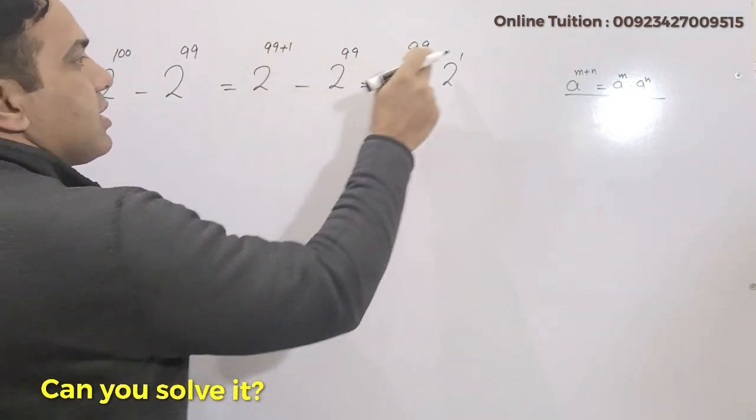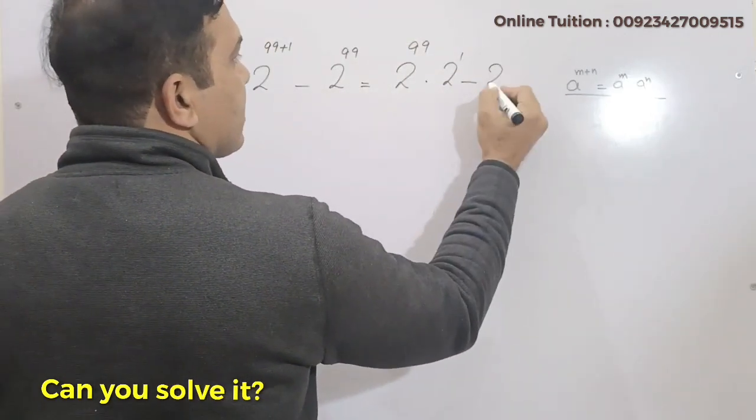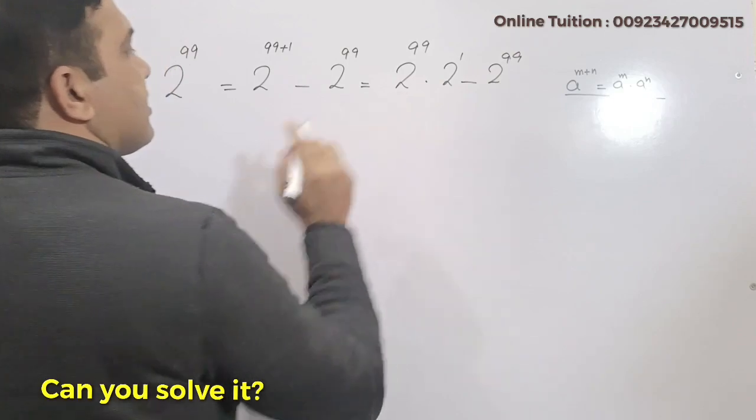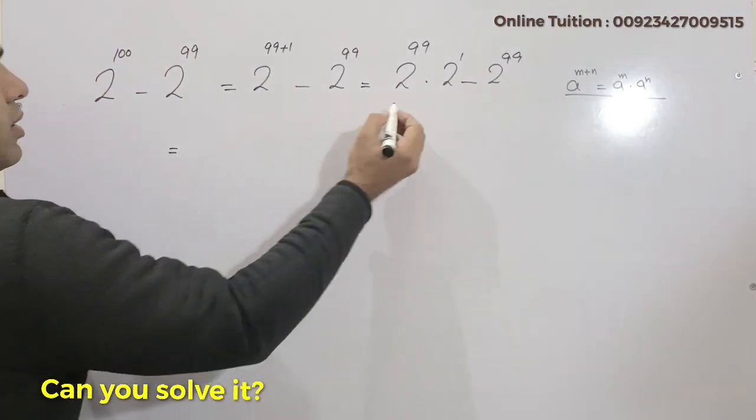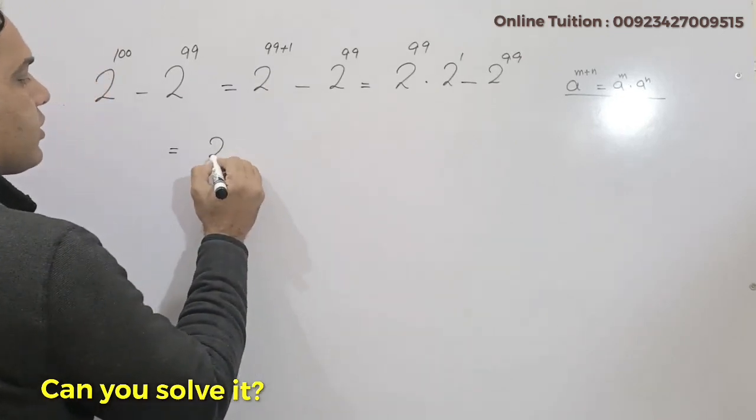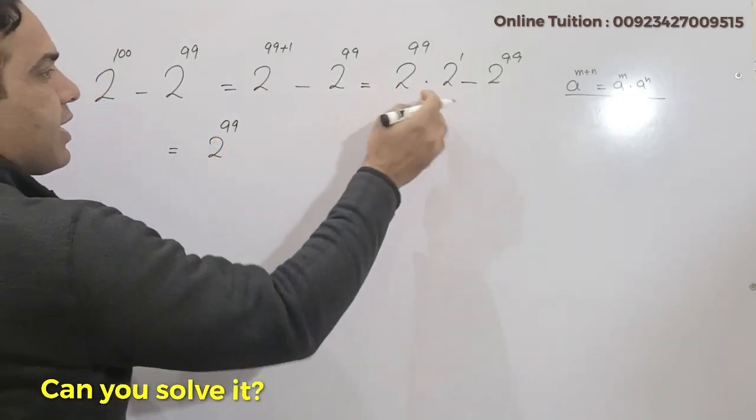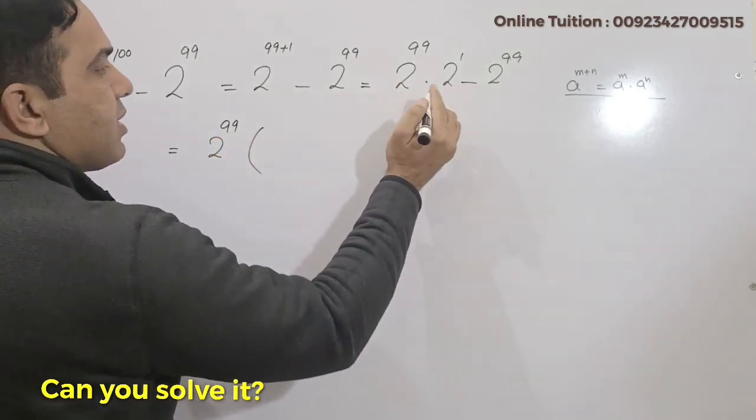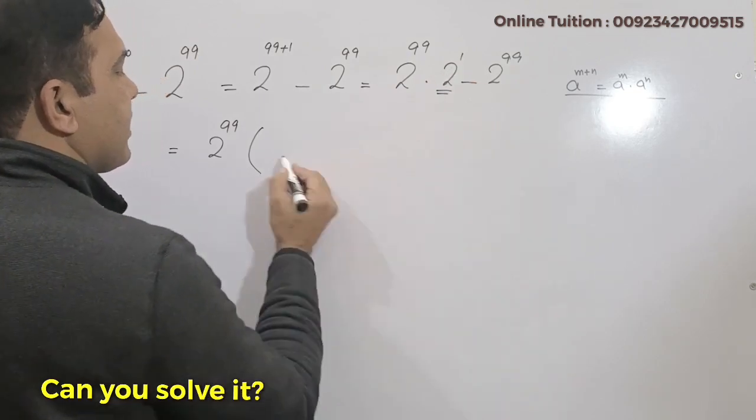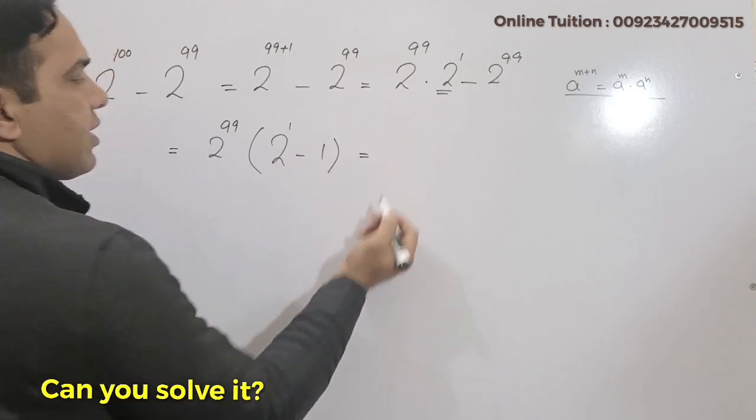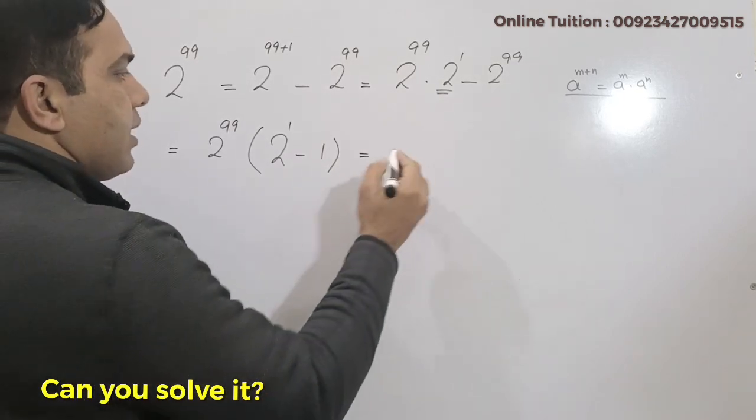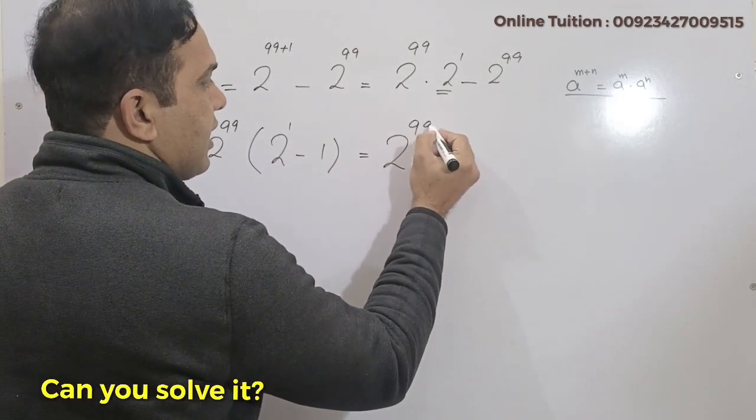I wrote this minus 2 raised to power 99. Now, take 2 raised to power 99 common from the bracket. This number here, 2 minus this is 1, clear. Now 2 raised to power 99...